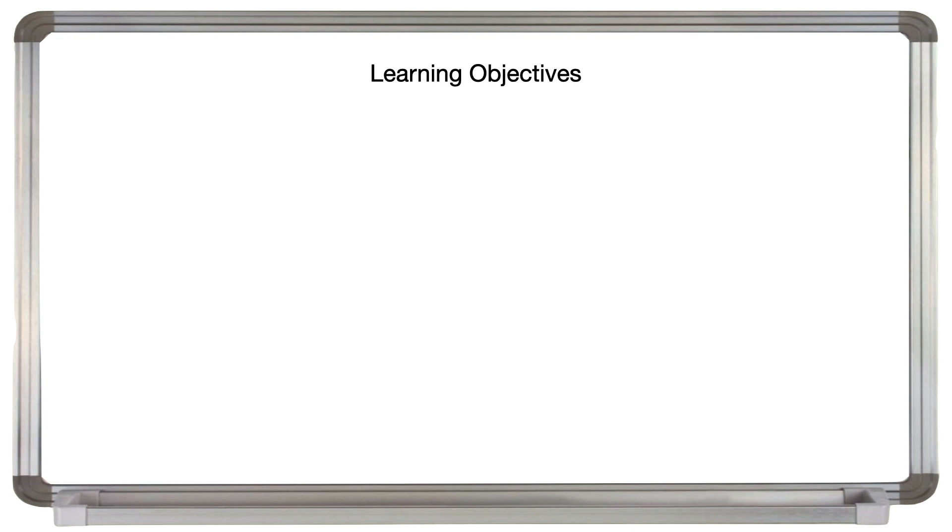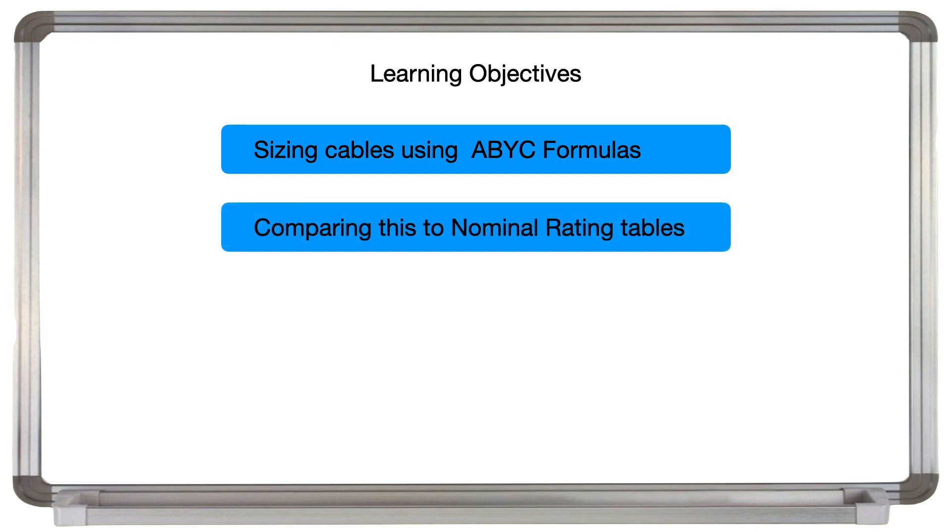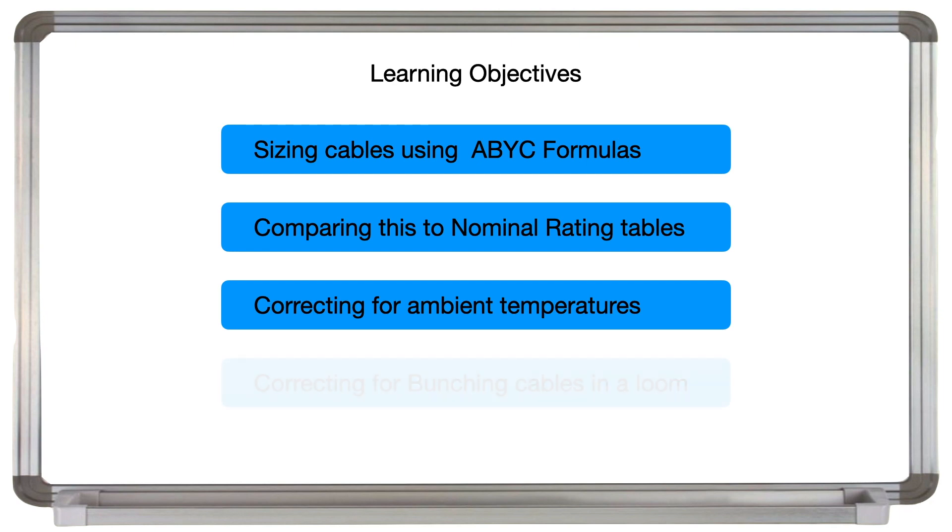In this lesson we're going to learn how to use the ABYC formulas. We're going to learn how to compare this to the cable ratings tables, correcting for ambient temperatures and correcting for bunching of cables in a loom.